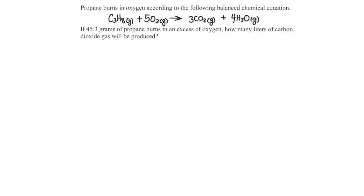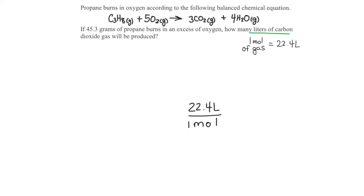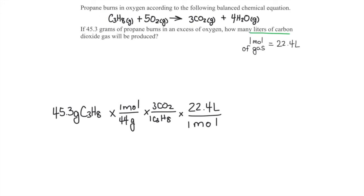Let's try one more example — we're going to move a bit faster on this one. Propane burns in oxygen to produce carbon dioxide and water vapor. If 45.3 grams of propane burns in an excess amount of oxygen gas, how many liters of carbon dioxide gas will be produced? This is a bit different because we're bringing in another unit — liters of gas. Remember from a previous lesson that one mole of any gas has a volume of 22.4 liters, so we'll use the conversion factor 22.4 liters per mole. So: 45.3 grams of propane divided by its molar mass of 44, times a mole ratio of 3 over 1, then multiplied by 22.4 liters per mole. We get an answer of 69.2 liters of carbon dioxide.